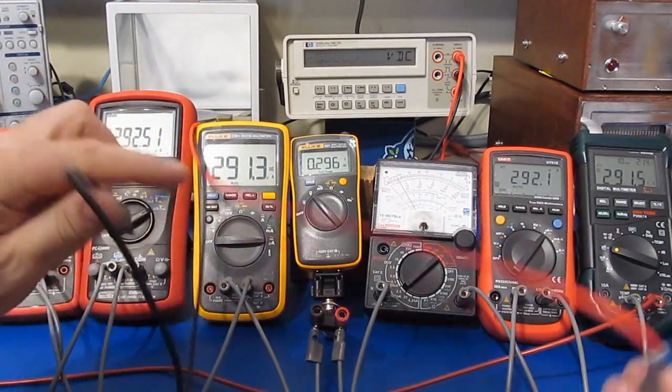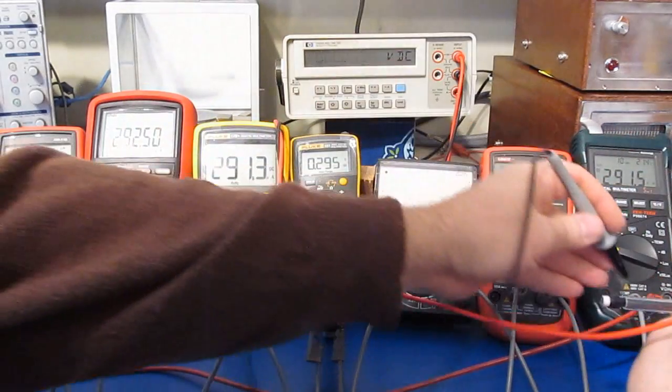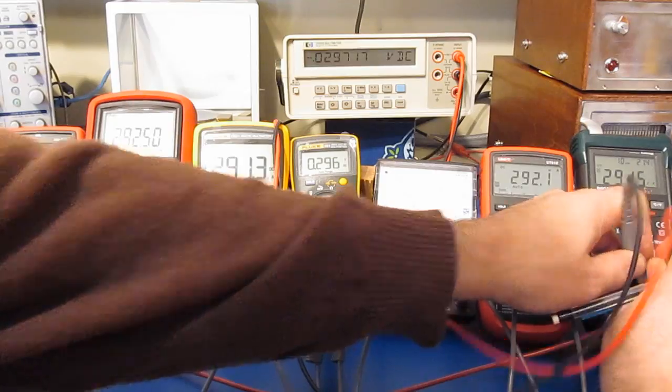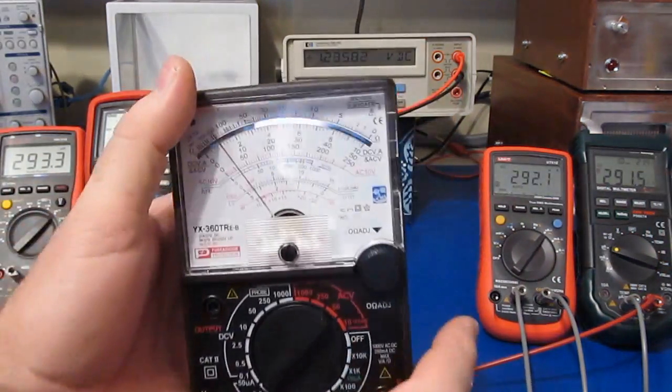And the last but not least is our Maztec meter. And again, looks like a 100 ohm resistor. 29.7.